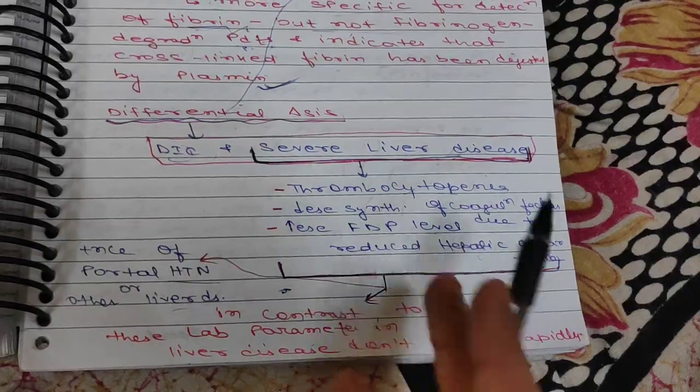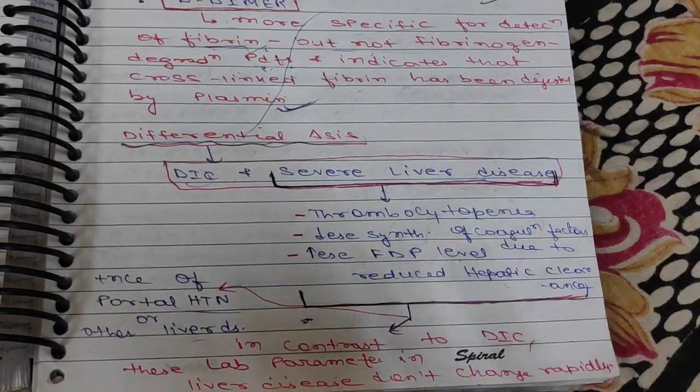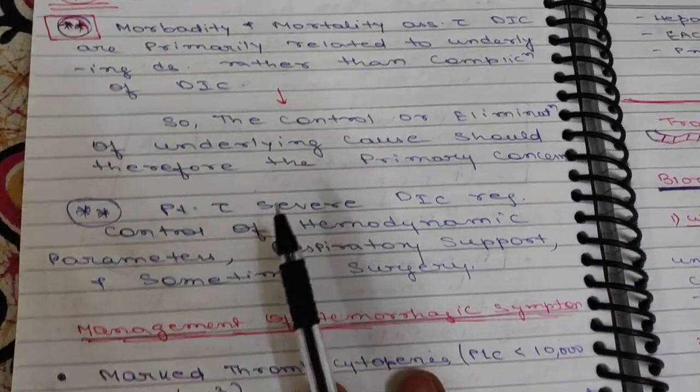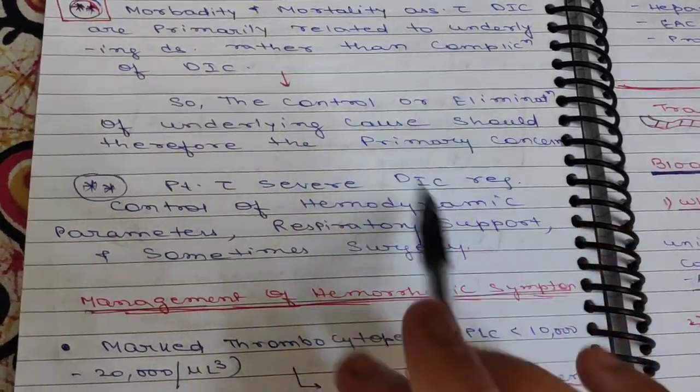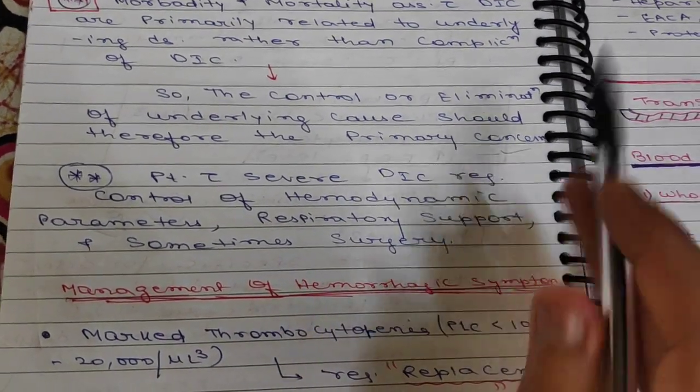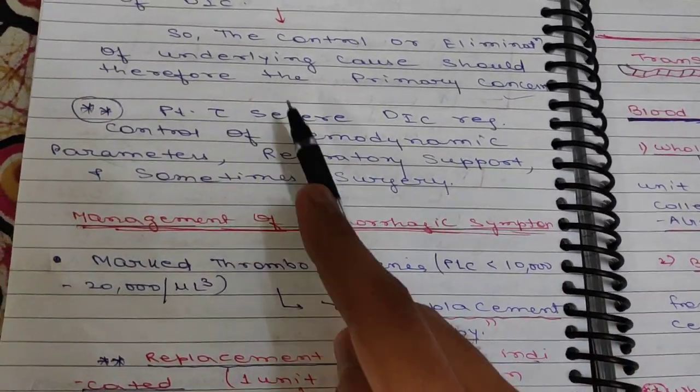What is the treatment? Morbidity and mortality with DIC are primarily related to the underlying disease rather than amplification of DIC. Control or elimination of the underlying cause should be the primary concern. Patients with severe DIC require control of hemodynamic parameters, respiratory support, and sometimes surgery.